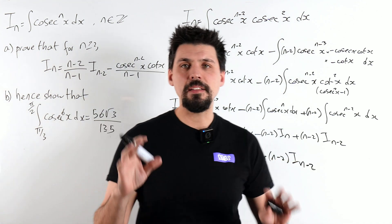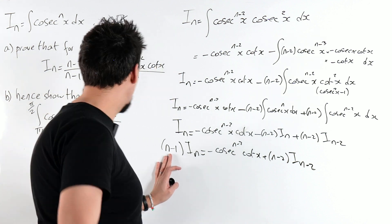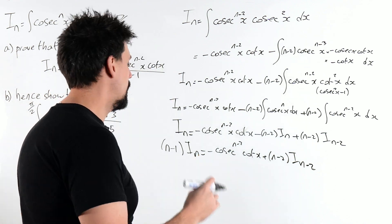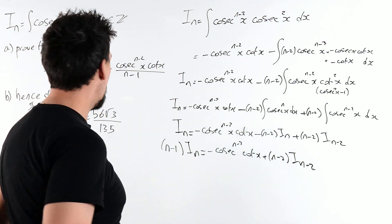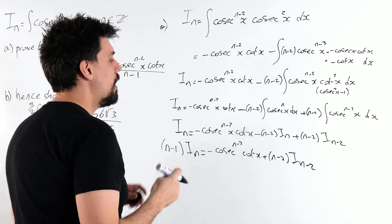Alright, and that's all we need. Just one last tidy up, divide through by n minus 1, and we will get exactly what we wanted. Everything we've ever wanted. Okay. Part A done.